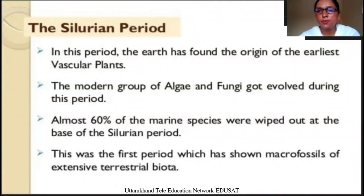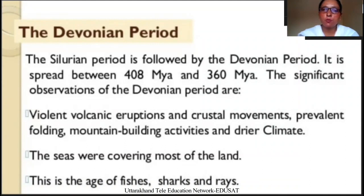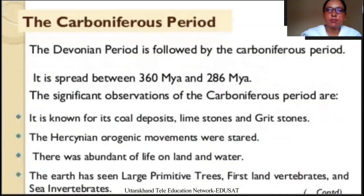The fourth part of the Paleozoic era is also known as the Devonian period. The Silurian period is followed by the Devonian period. It is spread between 408 million years ago to 360 million years ago. The significant observations of the Devonian period are violent volcanic eruptions and crustal movements, prevalent folding and mountain-building activities, and drier climates. The seas were covering most of the land. This is the age of fishes, sharks, and rays.